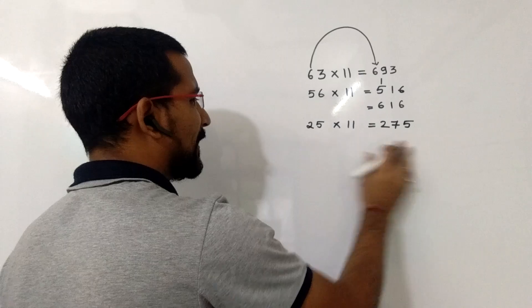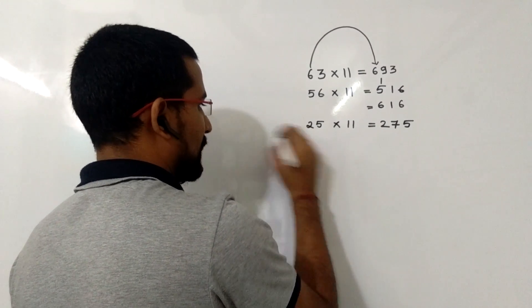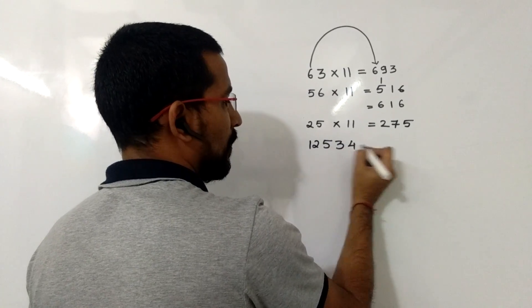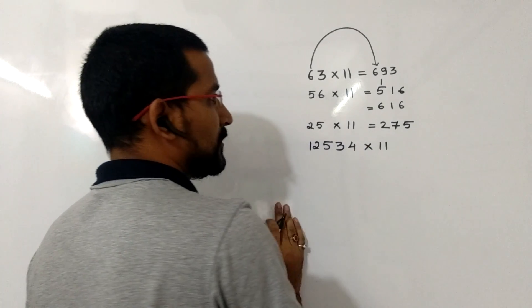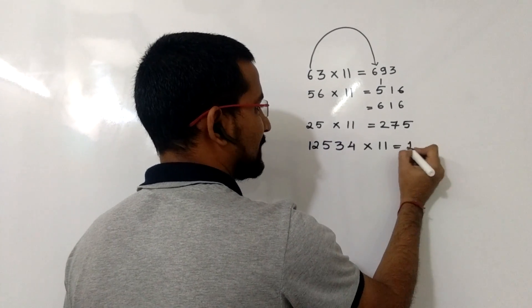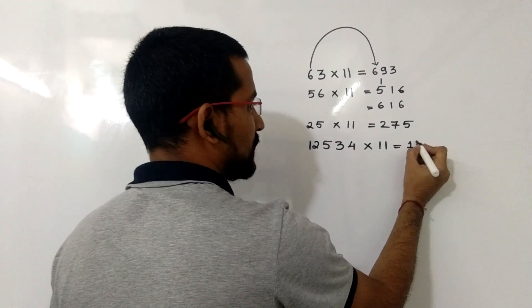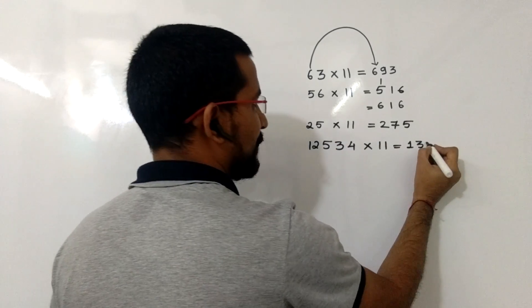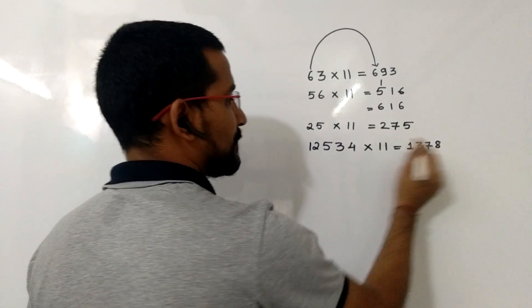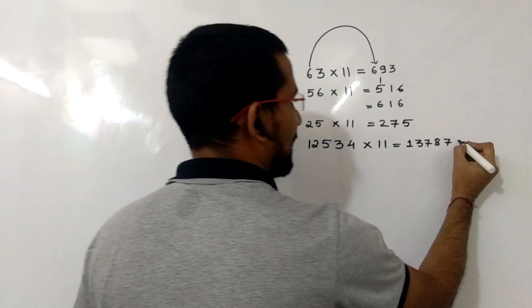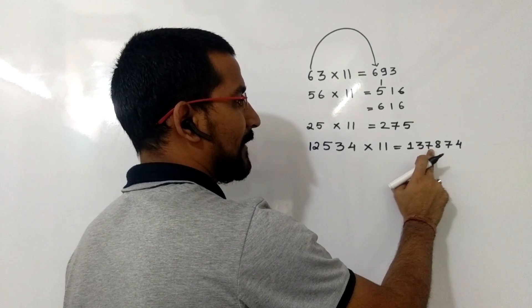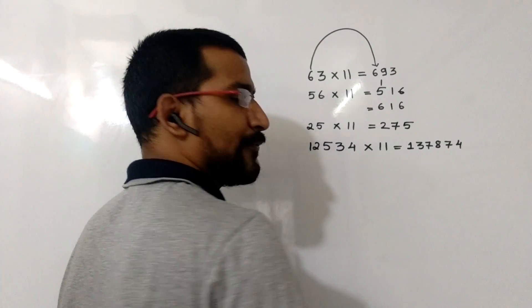Now we will take a bigger number. For example, you want to multiply 12534 with 11. So now again, first digit, this one, will be as it is. 1 plus 2 is 3, 2 plus 5 is 7, 5 plus 3 is 8, 3 plus 4 is 7, and the last digit as it is, that is 4. So the answer will be 137874.